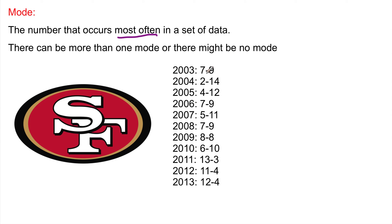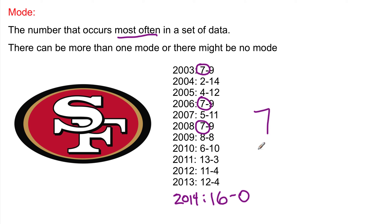Since 2003, the win totals are: 7, 2, 4, 7 — 7 is happening again — 5, 7 again in 2008, then 8, 6, 13, 11, 12, and 2014. We have 7 happening here, 7 happening here, 7 happening here — 7 happens the most times in the past 10 years. So the mode for this set of numbers, the number that occurs most often, is unfortunately 7. Over the next few years, 2015 and 16, we're going to have more numbers in the high teens — probably 16 and 0 for the next several seasons. Go 49ers!